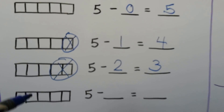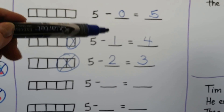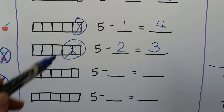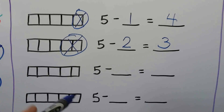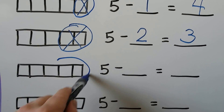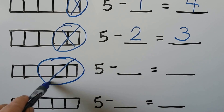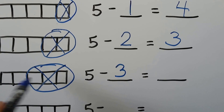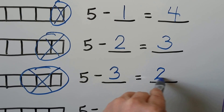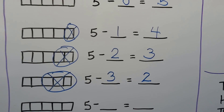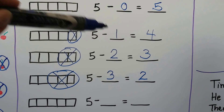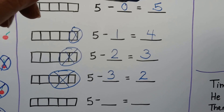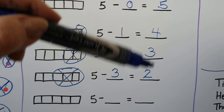Do you see what's happening with the numbers? 0, 1, 2. So now if we take three of them away, there'll be one, two left. Can you see the pattern? 0, 1, 2, 3 — and this side's counting down: 5, 4, 3, 2.